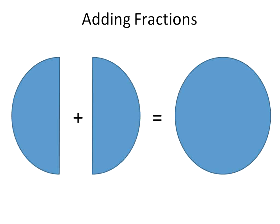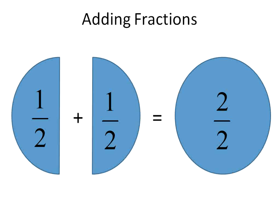Here's the basics of adding fractions. If you have a half of a circle and you add it to the other half, you get the whole circle. So 1 half plus 1 half gives you 2 halves. You added the numerators only — the denominator remained the same. 1 over 2 plus 1 over 2 gives you 2 halves, which is also equal to 1 whole.